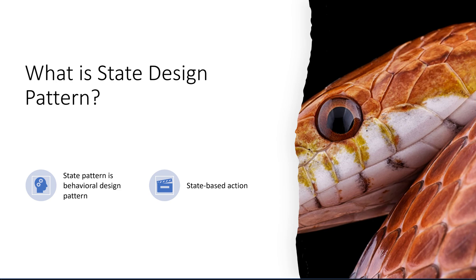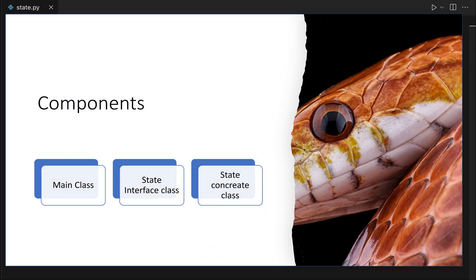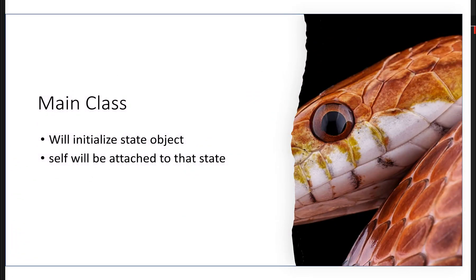So why is this state-based design pattern very important? To implement this design pattern you need three classes. The first is the main class, which will have state objects initialized. Instances of those concrete state classes will be initialized while initializing the main class, and self of that main class will be attached to the state class object so it can be accessed in the state class.